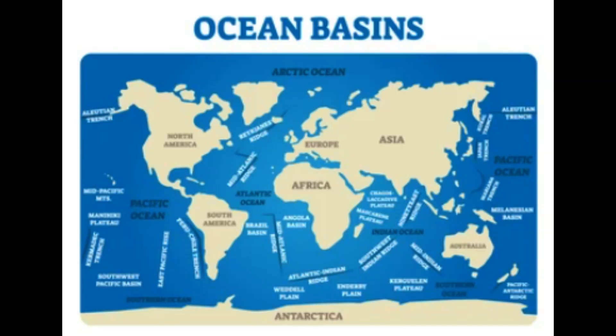The Southern Ocean Basin, also known as the Antarctic Ocean, surrounds Antarctica and extends from the coast of Antarctica to approximately 60 degrees south latitude. It is characterized by the presence of the Antarctic Circumpolar Current, which is the largest ocean current in the world, circulating clockwise around Antarctica. The Southern Ocean Basin is renowned for its harsh and extreme conditions, including extremely low temperatures and the presence of massive ice shelves.